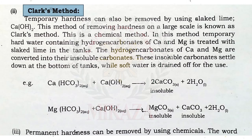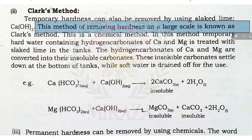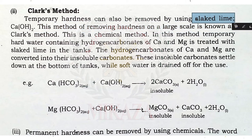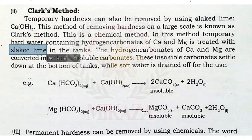For removing hardness on a large scale, Clark's method is used. In Clark's method we use slaked lime. In this method, temporary hard water containing hydrogen carbonates of calcium and magnesium is treated with slaked lime in tanks. The hydrogen carbonates of calcium and magnesium are converted into insoluble carbonates, which settle at the bottom of the tanks, while soft water is drained off for use.